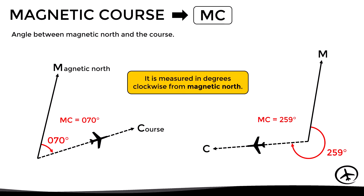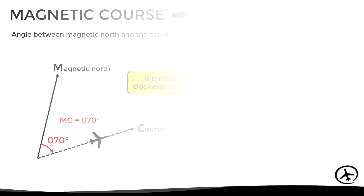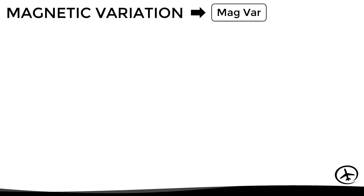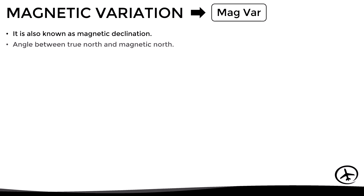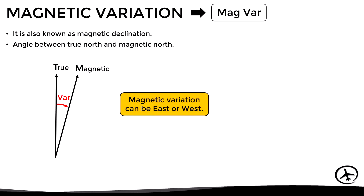The difference between true north and magnetic north is called magnetic variation, often abbreviated as mag var, which is also known as magnetic declination. It is defined as the angle between the direction to true north and the direction to magnetic north. This magnetic variation can be east or west depending on our position on earth.